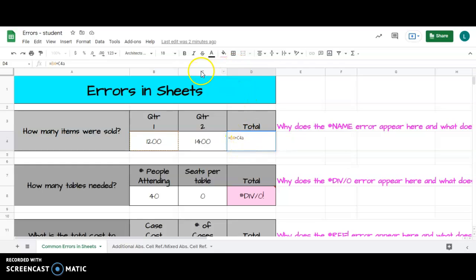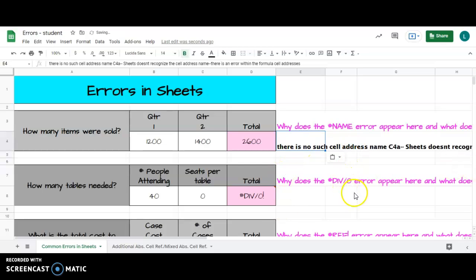C4A is not the name of a cell address. C4 is, but not C4A, so it doesn't recognize the name. That's why it's saying NAME. If you just delete the A there and hit enter, you get the correct answer. So why does the NAME error appear? It doesn't recognize the cell address name—doesn't recognize something in the formula.